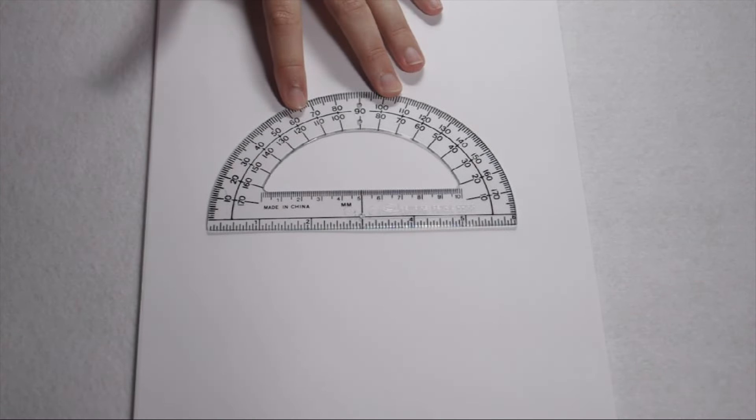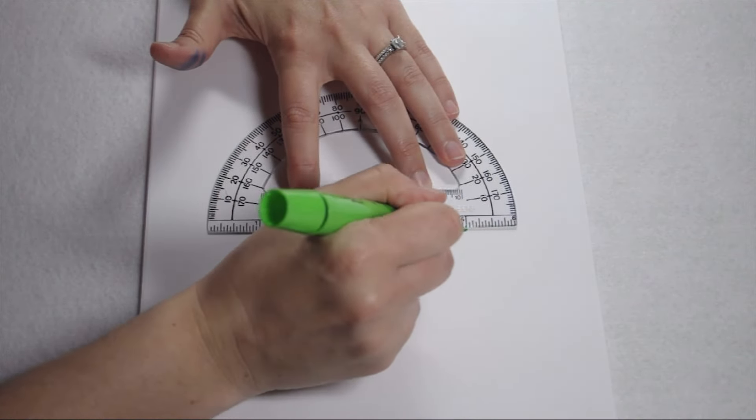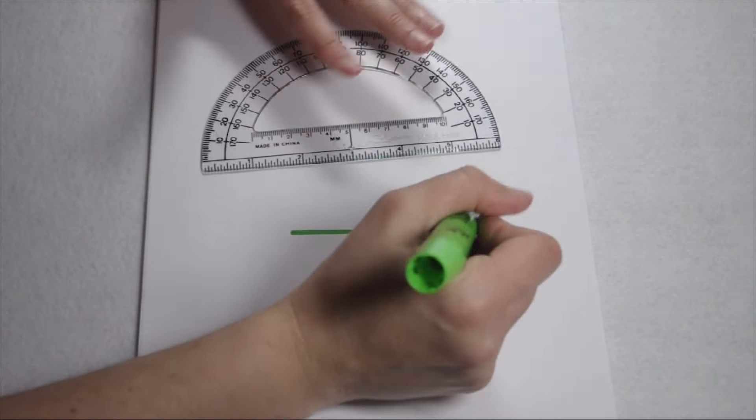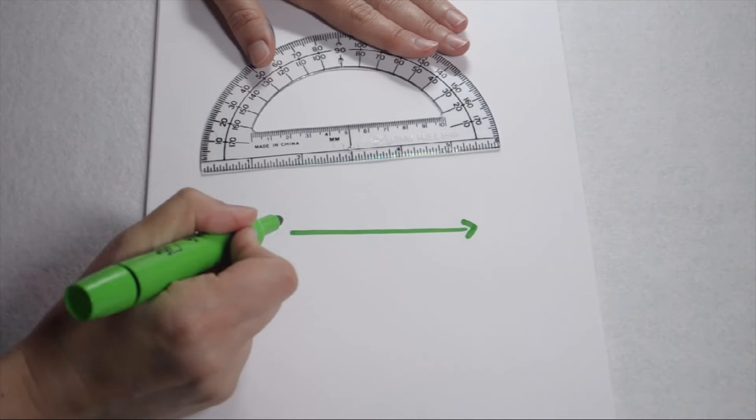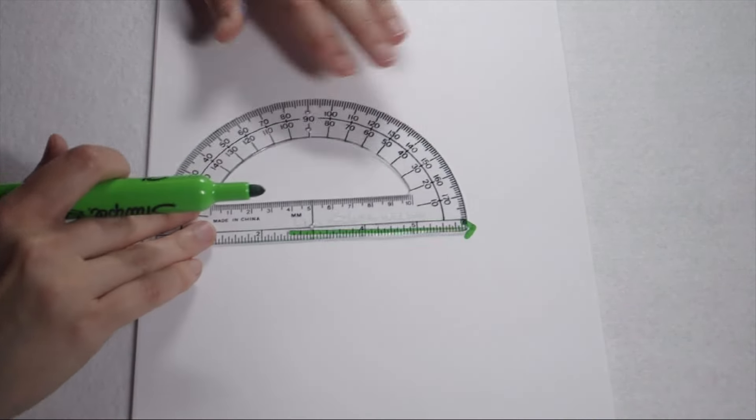We can use our protractor to draw an acute 50 degree angle as well. Again, I'm going to use my protractor as a straight edge to create my first ray. I'm going to then line up my vertex with the circle and my bottom ray along that black line.